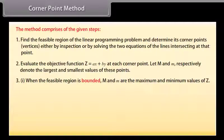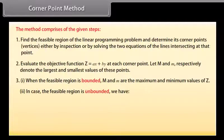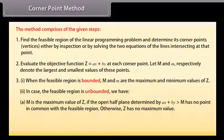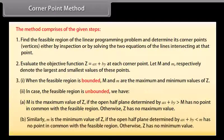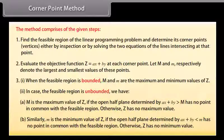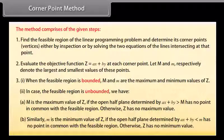Step 3: (i) When the feasible region is bounded, M and m are the maximum and minimum values of Z. (ii) In case the feasible region is unbounded: (A) M is the maximum value of Z if the open half plane determined by AX plus BY greater than M has no point in common with the feasible region; otherwise Z has no maximum value. (B) Similarly, m is the minimum value of Z if the open half plane determined by AX plus BY less than m has no point in common with the feasible region; otherwise Z has no minimum value.